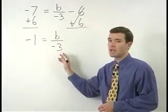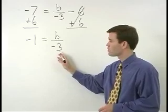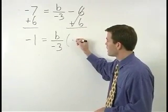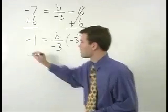To get B by itself, since B is being divided by negative 3, we just multiply both sides of the equation by negative 3.